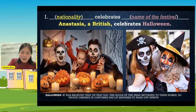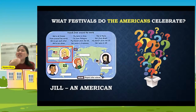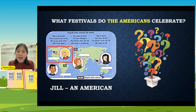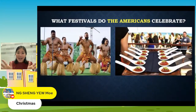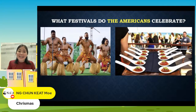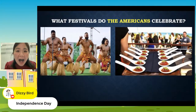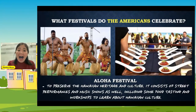Let's move on to Americans. One person uses Superman's S — now we talk about many. Can you brainstorm any festival that Americans celebrate? Christmas, yes! And there's also the Aloha Festival. This is a traditional costume by the Hawaiians — that's why Hawaiians always dance like that. This festival is called the Aloha Festival. They celebrate it to preserve the Hawaiian heritage and culture. On this day there are street performances, dancing, music shows, wearing traditional costumes, food tasting, and workshops that teach Hawaiian cooking.